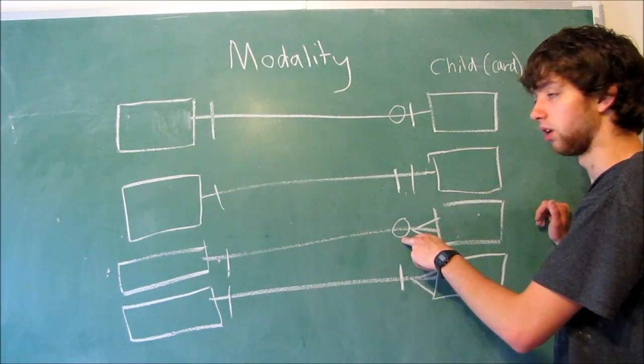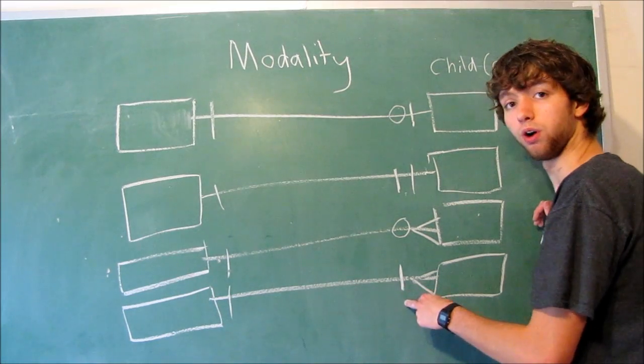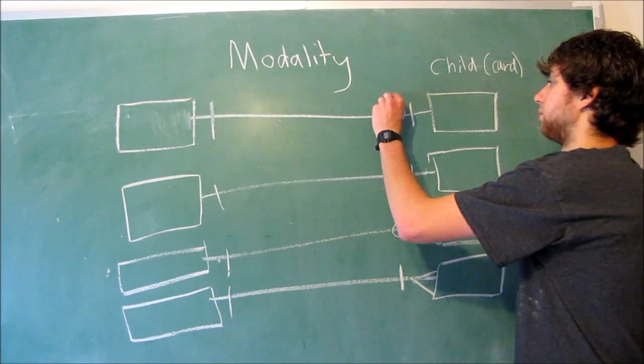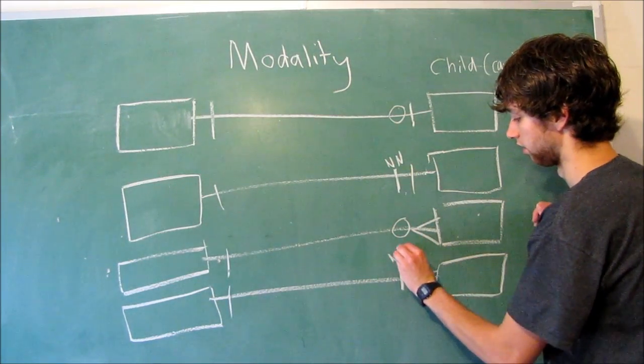So zero or one cards. One or one cards. Zero, at least zero cards, because you can have up to many, or at least one card. So this means not null, not null.